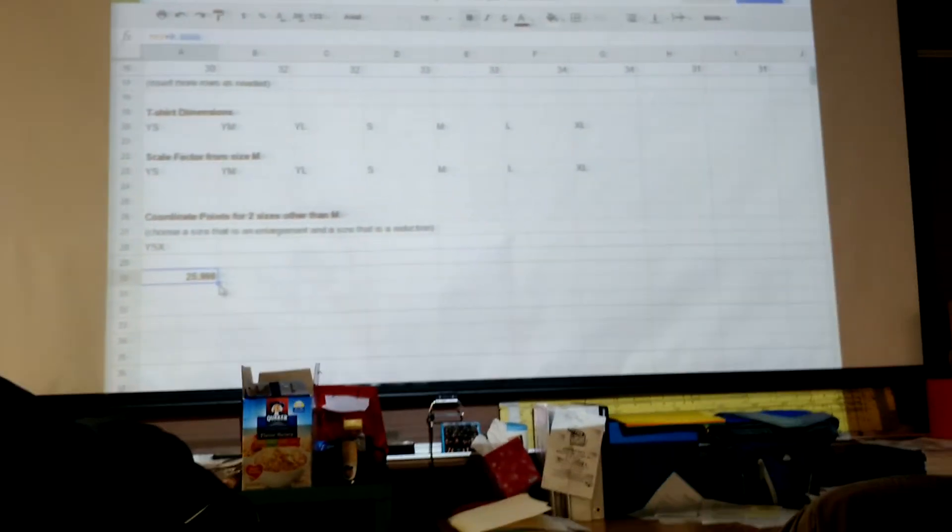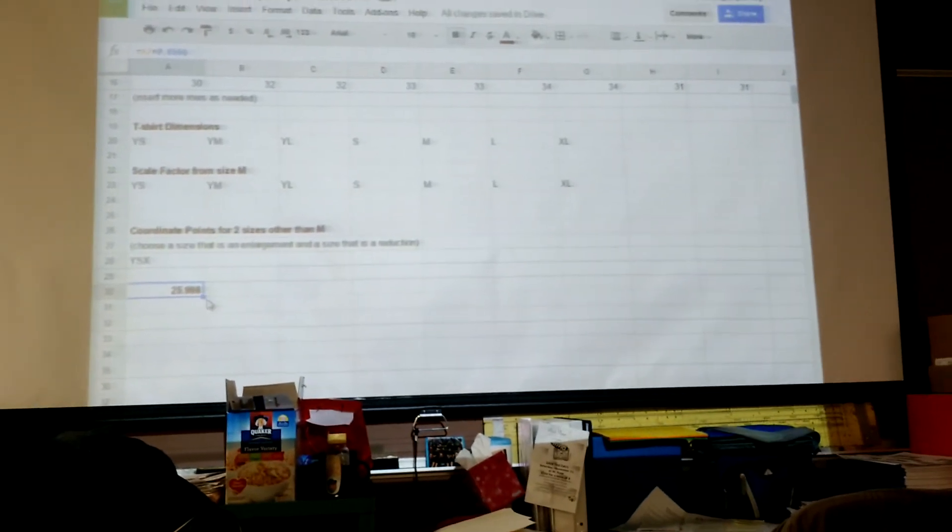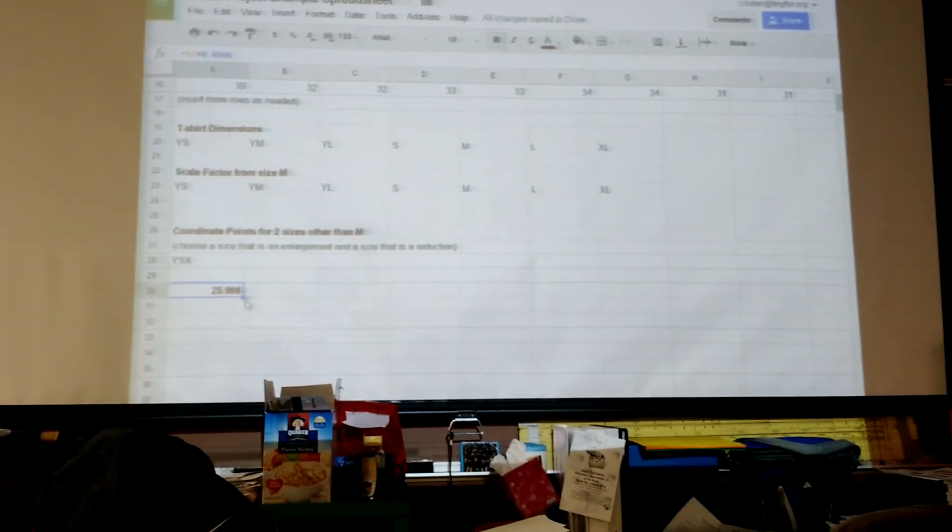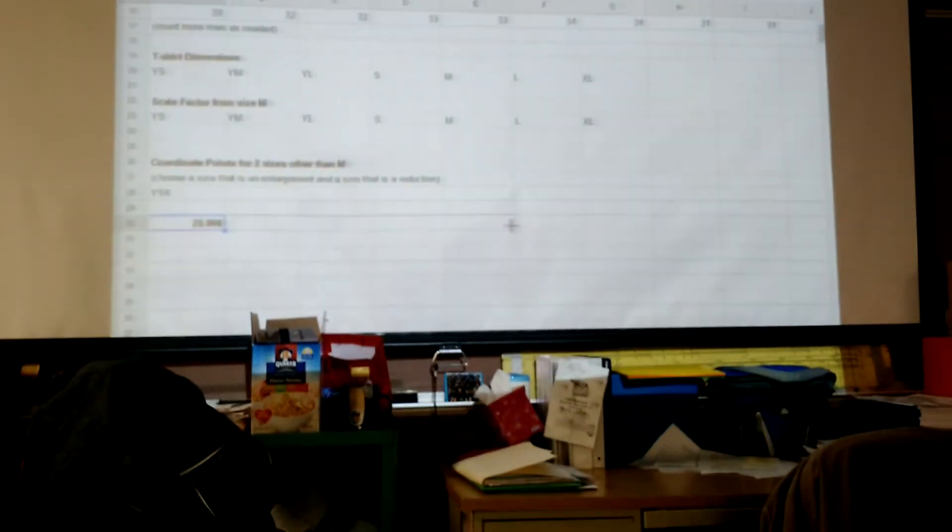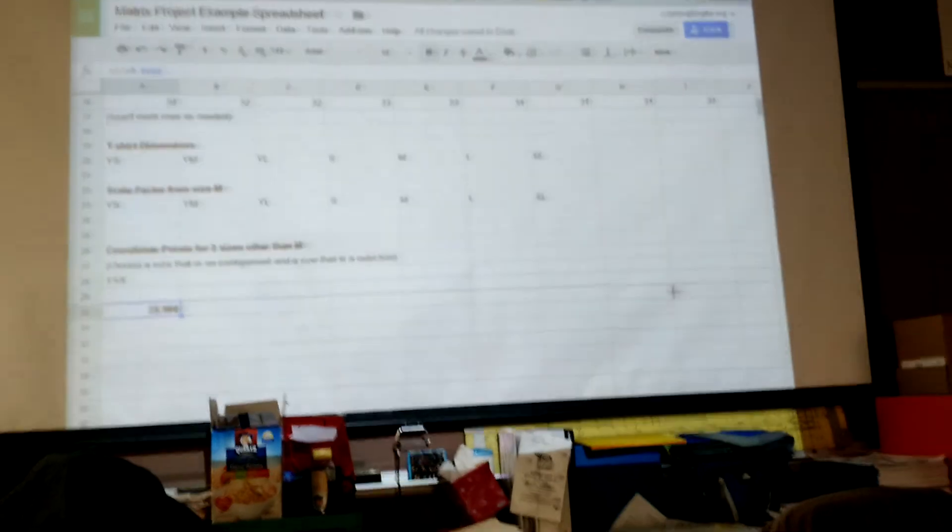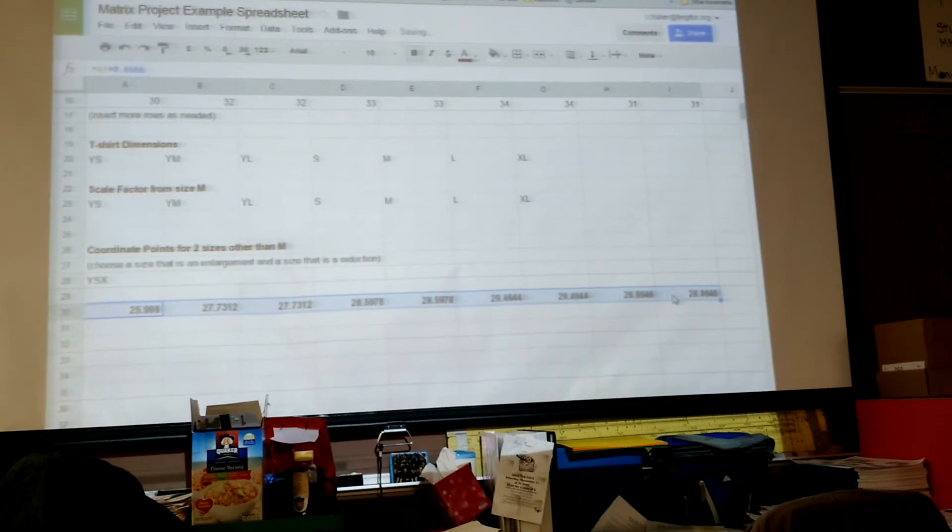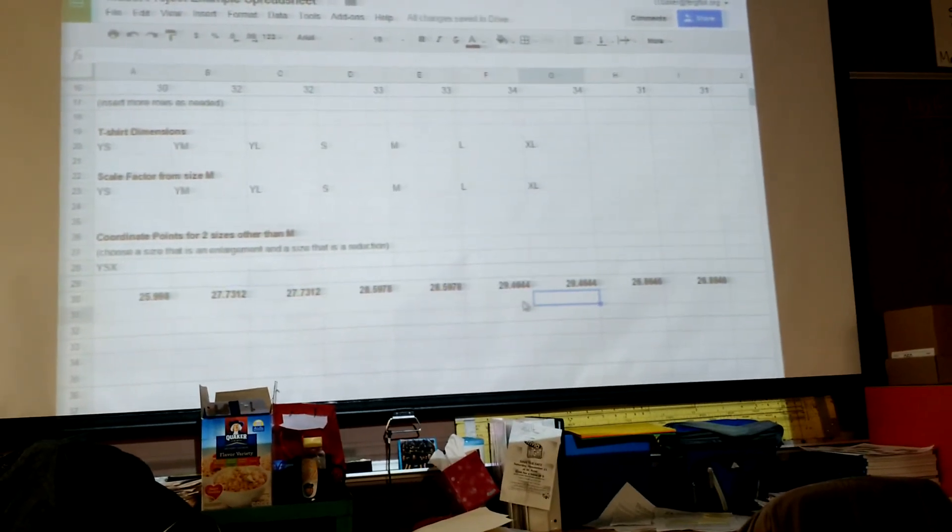The shortcut you can use for that formula so you don't have to do it over and over again is this blue square on the bottom. When I hover on it, it gets that plus sign. If I drag that over as far as my points go, it will do that to all the points. That's going to save you time.